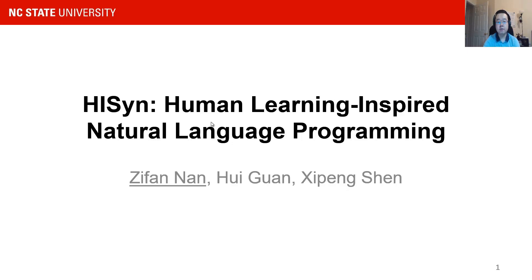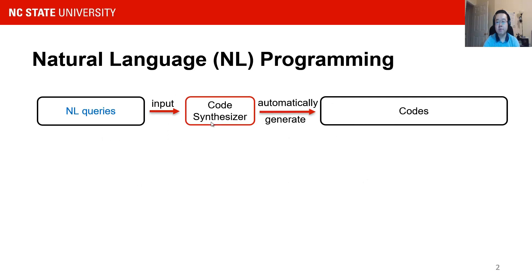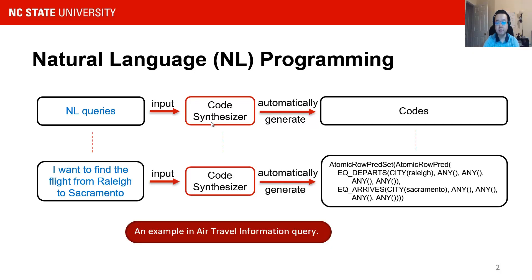Let's start with the first question: natural language programming. Natural language programming refers to the situation where a code synthesizer should automatically produce programming code based on natural language input from users. For example, in the air travel information domain, if the user provides the English query 'I want to find a flight from Raleigh to Sacramento,' the code synthesizer should automatically generate the desired code, which can query the correct result from the air travel information system.